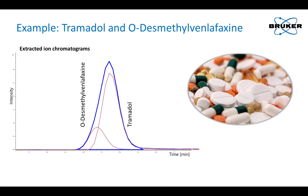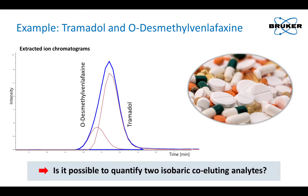We present an example of the opioid pain reliever Tramadol and the antidepressant O-Desmethylvenlafaxine, which are isobaric analytes that are known to be easily mixed up. The respective extracted ion chromatograms show that these compounds are not well separated.